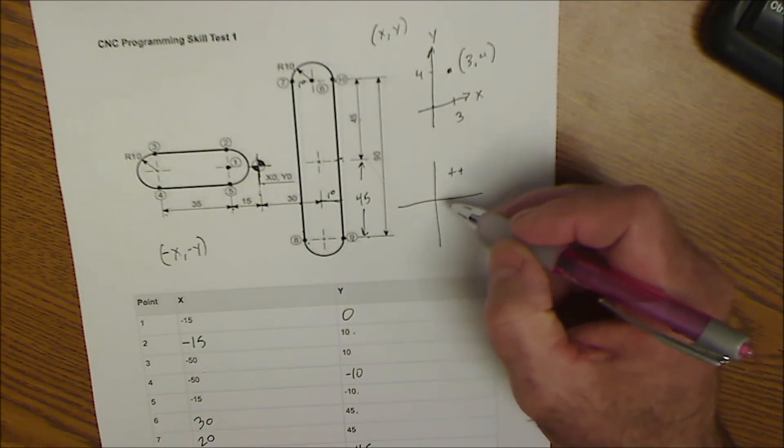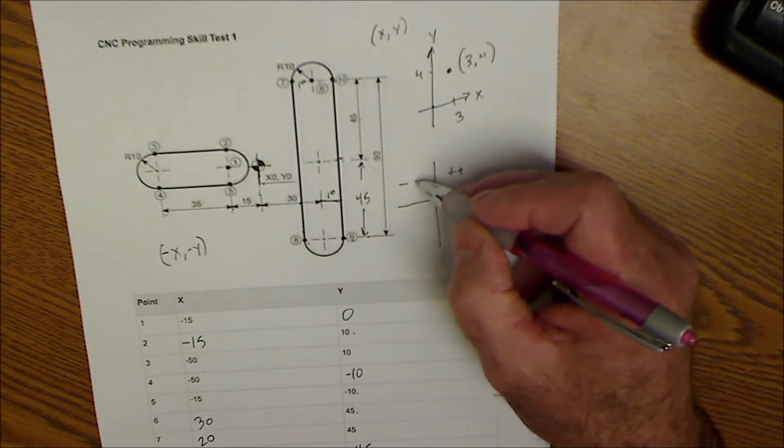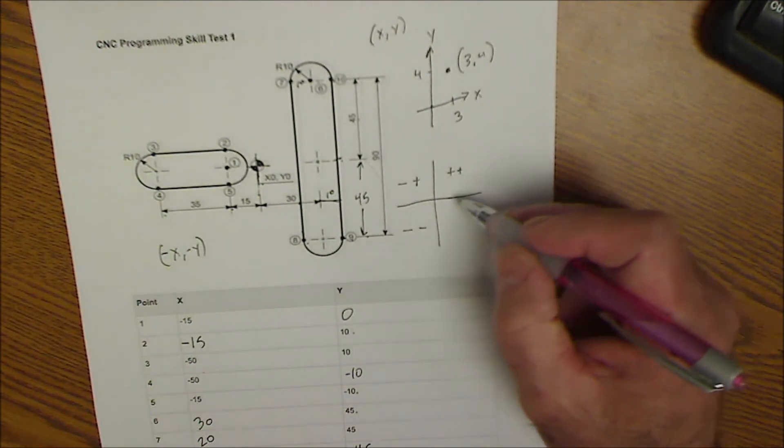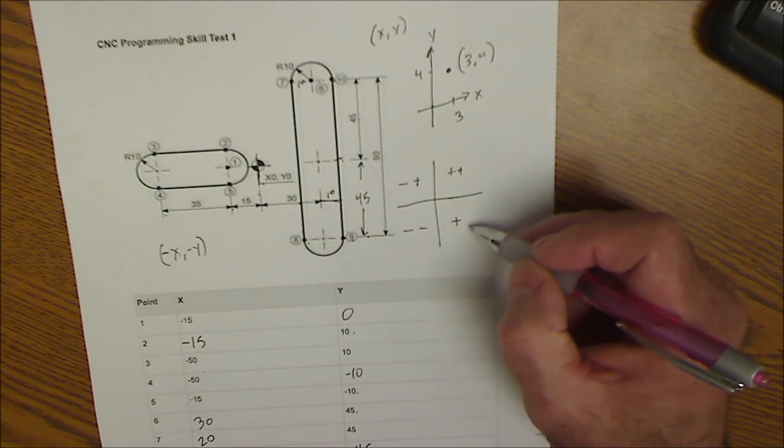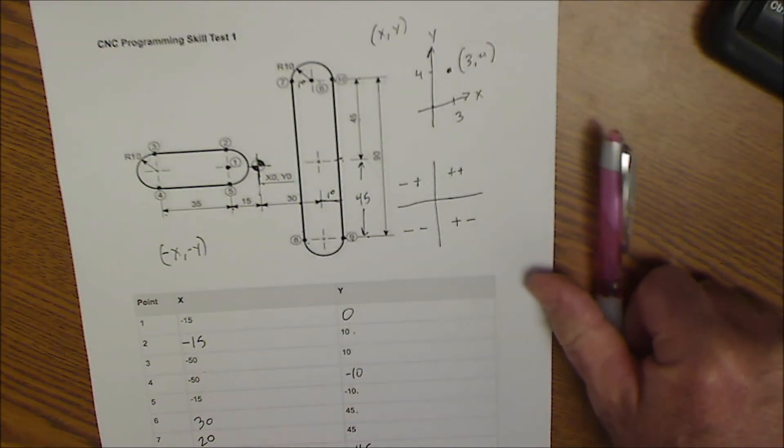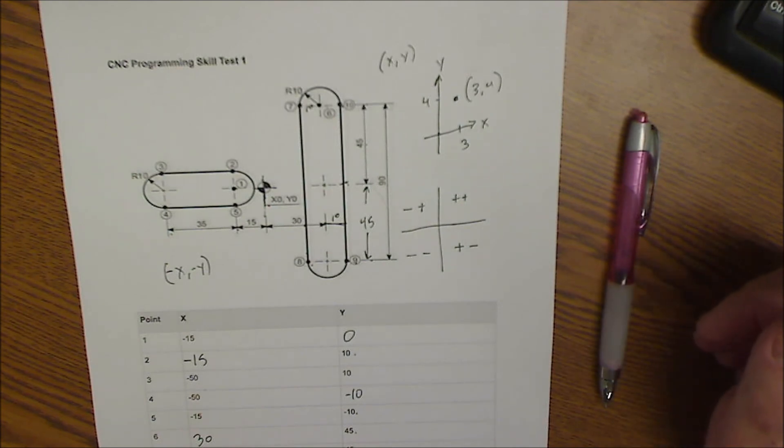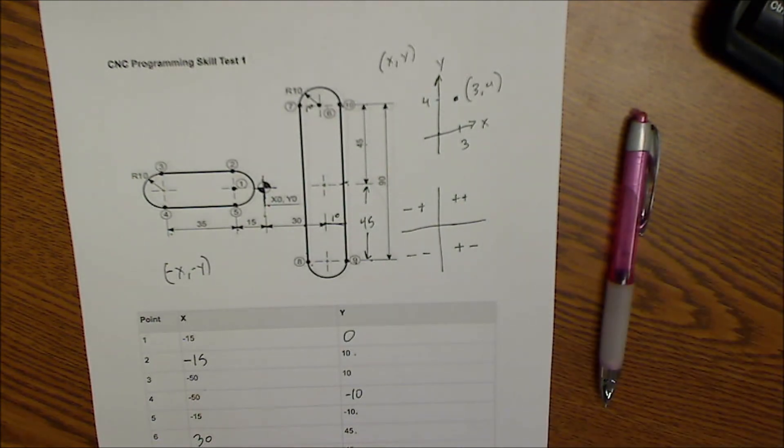This is always my first value. In this quadrant I'm negative but up positive. Over here this is negative, negative. Here I travel over positive but then I go down - positive, negative.